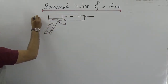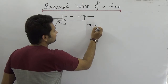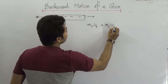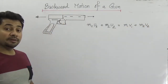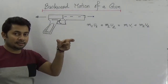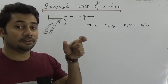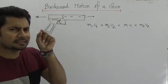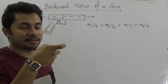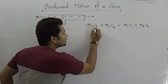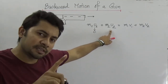We know there is a rule: M1·U1 + M2·U2 = M1·V1 + M2·V2. But we need to know that when we fire the gun the bullet moves forward. Before the trigger is pulled, the bullet is inside the gun and both the bullet and the gun are in a rest phase. So we can say the initial velocity of the gun is 0 and the initial velocity of the bullet is also 0.